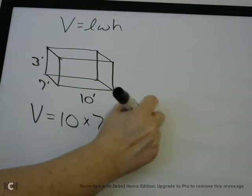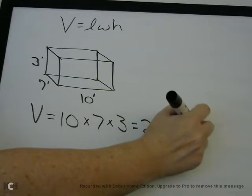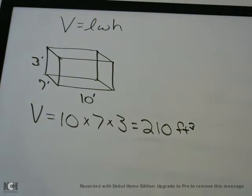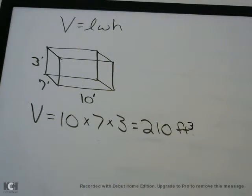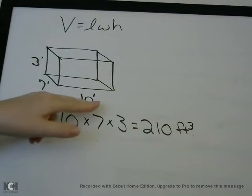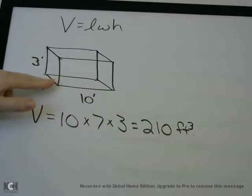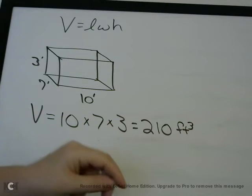Put that in your calculator and you get 210. This is in feet, so the answer will be feet cubed — it has a 3 for the exponent — because here you're doing 10 feet times 7 feet times 3 feet, multiplying three feet measurements together. So if you're doing a multiple choice question and all of the answers have a cubic unit on them, you're probably doing a volume question.